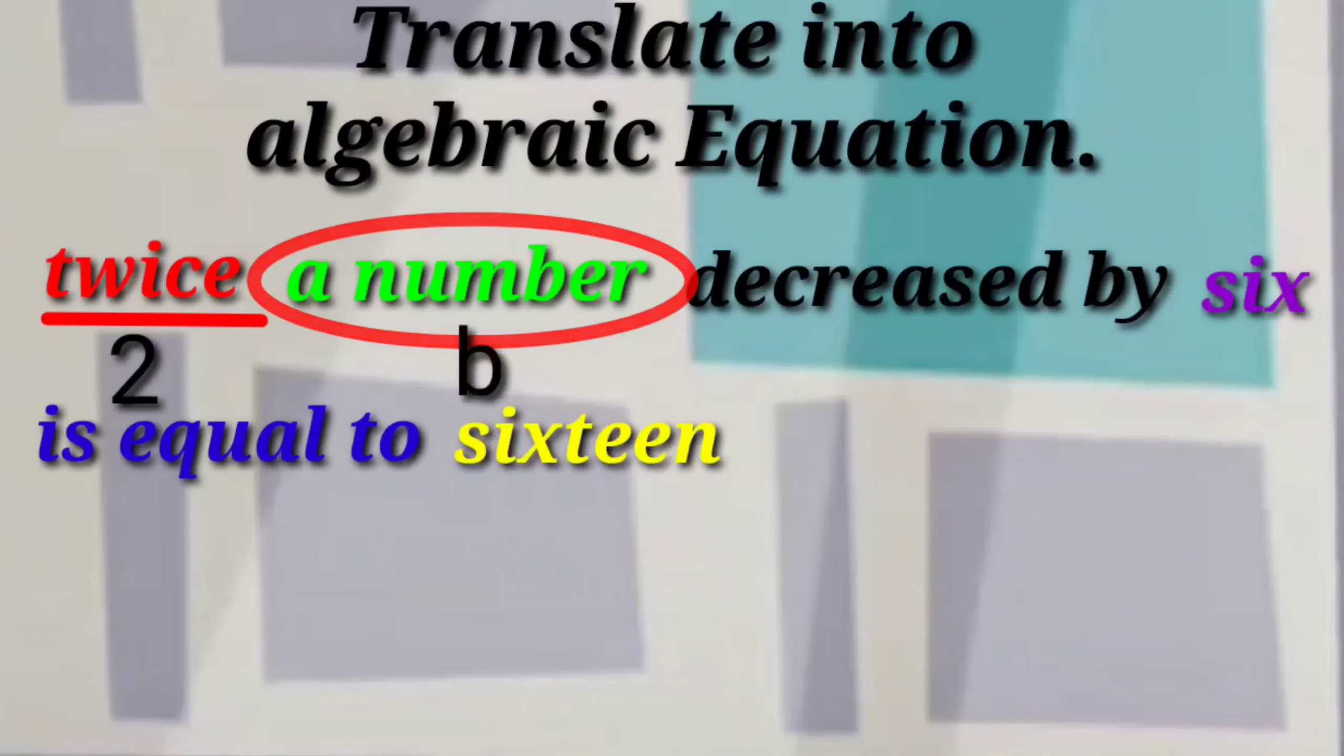In this example, I'll use letter B as the variable. Again, take note that a variable is a number. We don't know the value of a number. That is why I use letter.